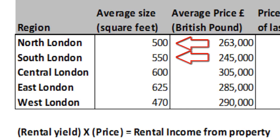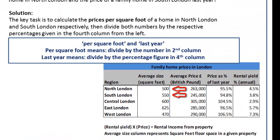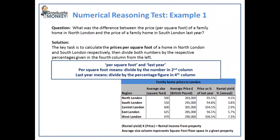Then you will need to calculate last year's prices. To do this, you need to take the per square foot prices and divide by the respective figures in the fourth column, as these figures represent the ratio of today's prices to last year's. For example, the prices for North, South and East London were higher last year.